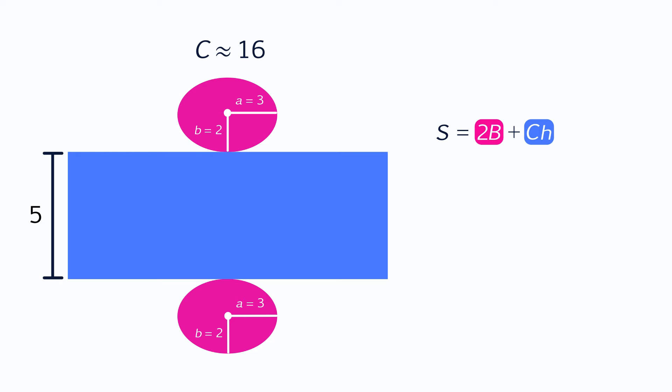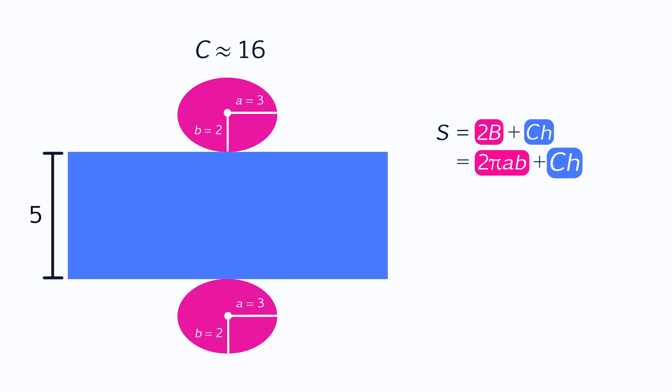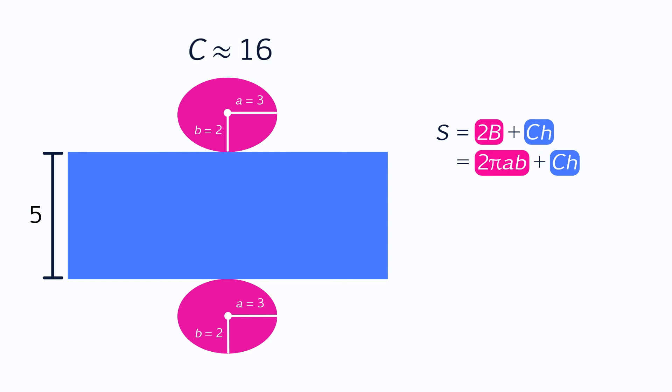The area of the base is the area of this ellipse. The area of an ellipse equals pi times the length of the semi-major axis A times the length of the semi-minor axis B. You can replace capital B in the formula with the expression for the area of an ellipse. The circumference times the height is the area of the big rectangle, which is the curved surface area. The length of the rectangle is the same as the circumference of the ellipse, which is 16.